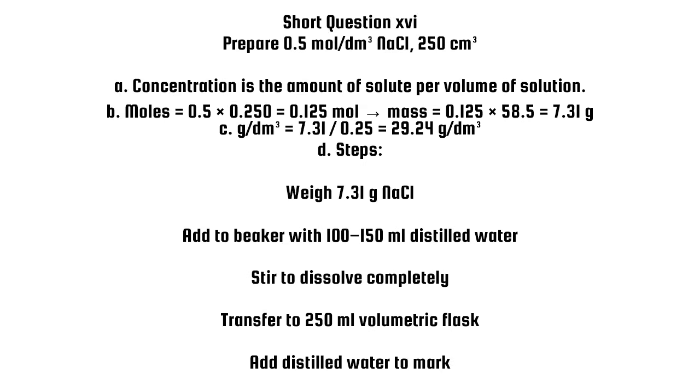Short question 16. A. Concentration is the amount of solute per volume of solution. B. Moles equals 0.5 times 0.25 moles equals 0.125 times 58.5 equals 7.31g. C. G per dm cubed equals 7.31 divided by 0.25 equals 29.24 g per dm cubed.